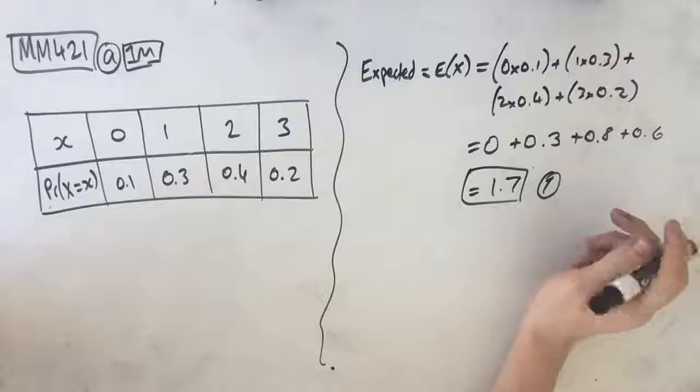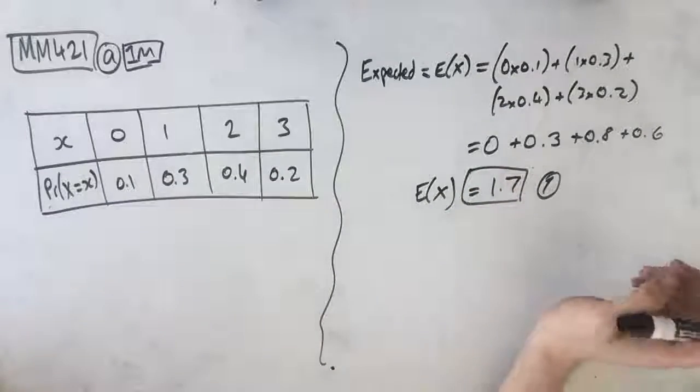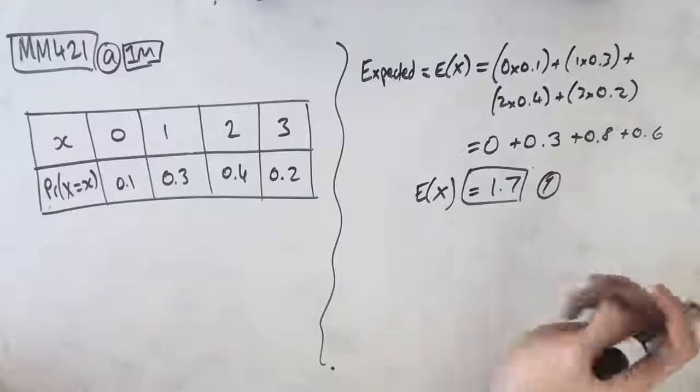That's our first and only mark. So our expected value of rude customers is 1.7. That's it for part A. Let's move on to part B.